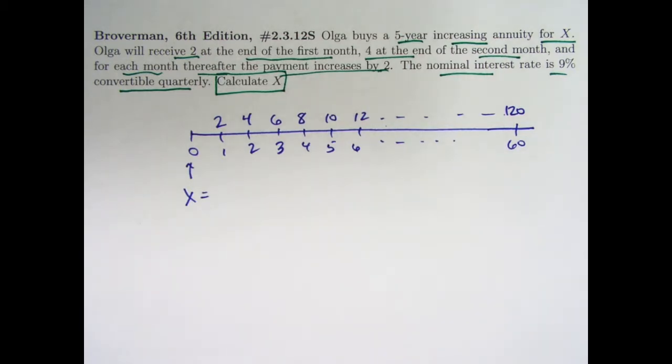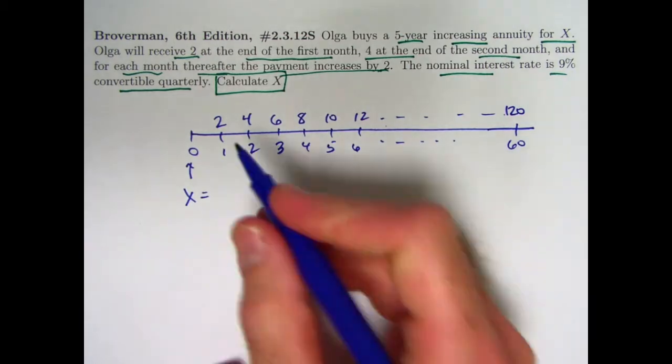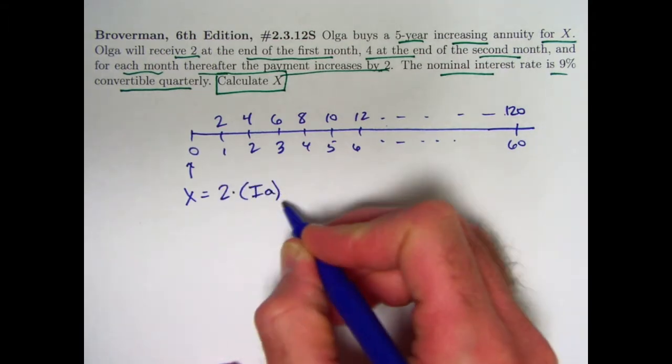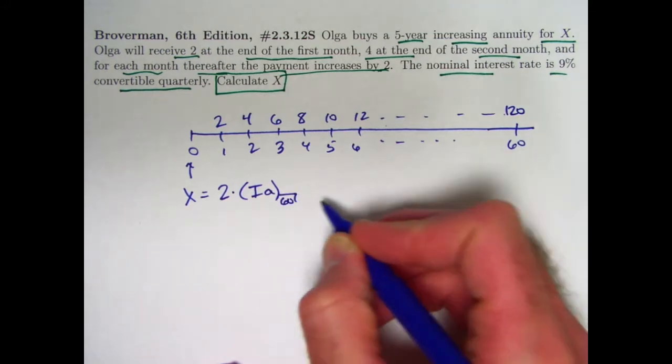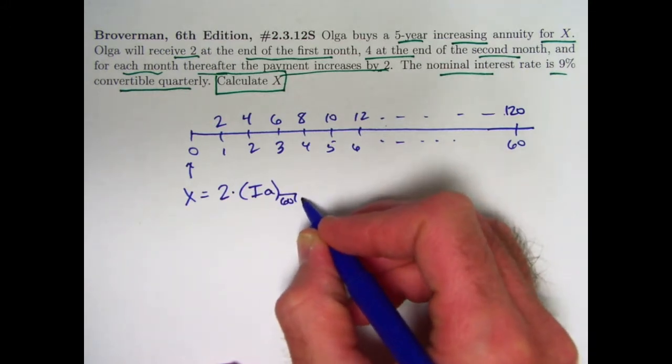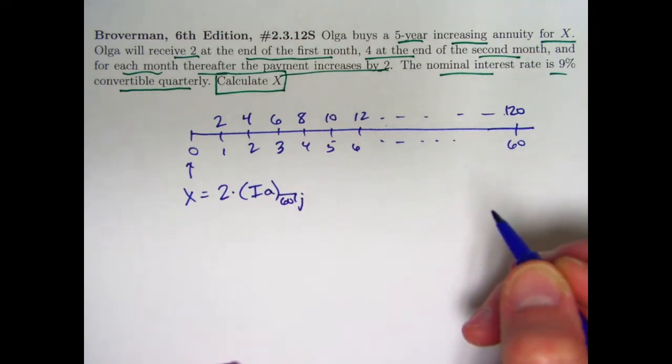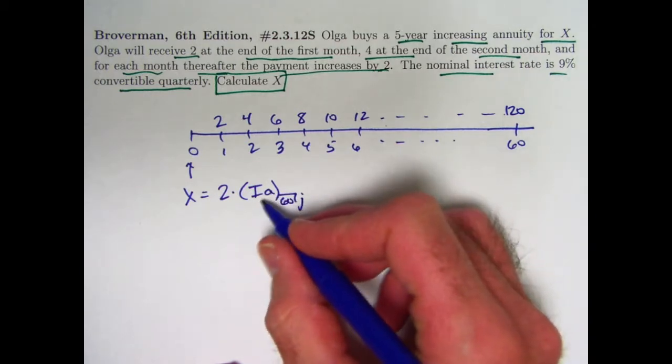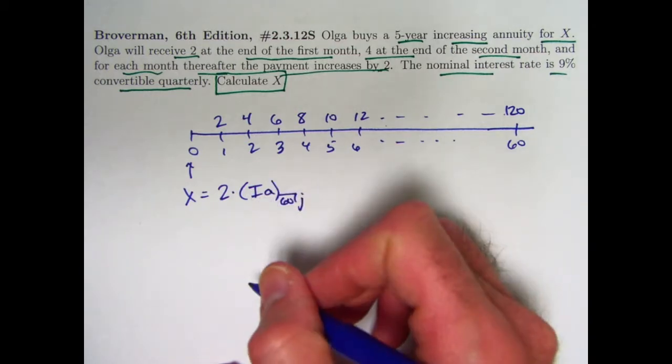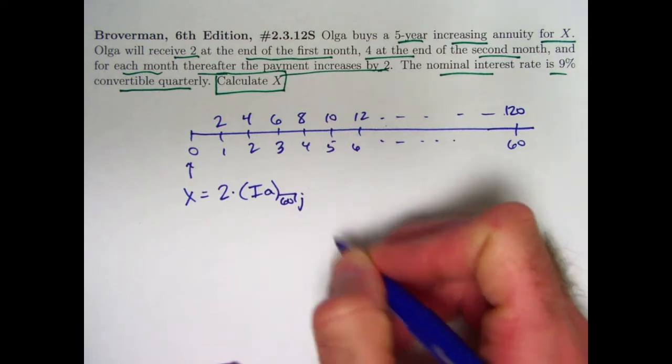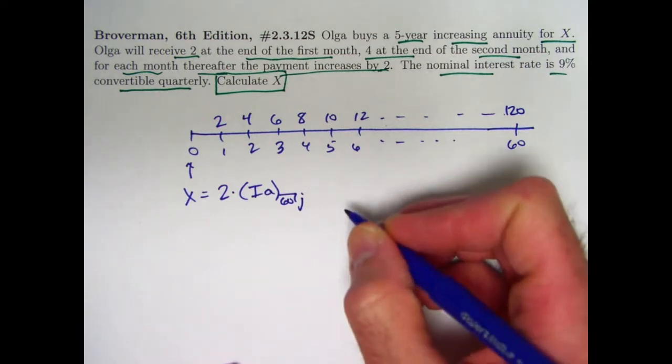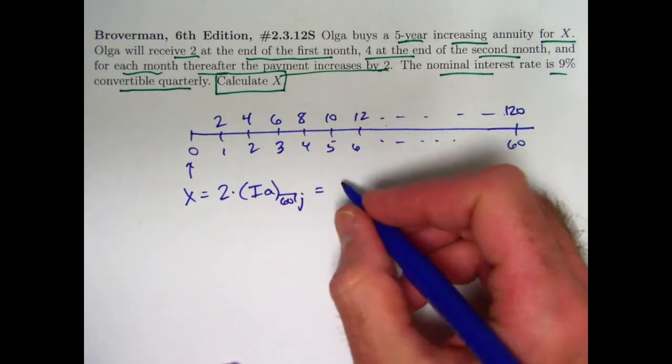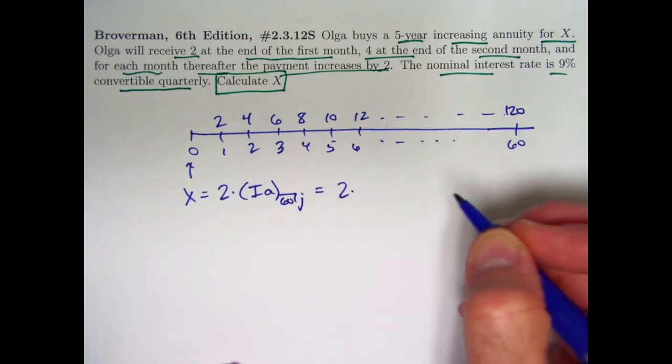Symbolically speaking, we can pretty easily write down what X is. It would be two times the standard present value of an increasing annuity. Based on 60 payments. We don't quite know the monthly interest rate yet, the effective monthly rate. Let's just call that J. We're going to have to solve for J before we evaluate this quantity. This is the present value of an increasing annuity with 60 payments with J as the interest per payment period.